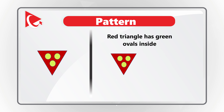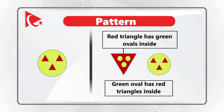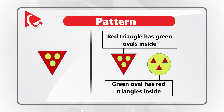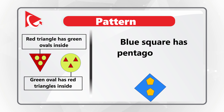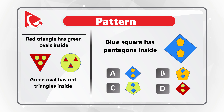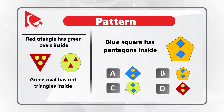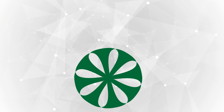If you look closely at the relationship presented, the red triangle has green ovals inside, and it has a relationship to a green oval that has red triangles inside. Knowing this, we need to determine the relationship of the blue square that has pentagons inside. All you need to do is take the pentagon which is inside the square, enlarge it, and put blue squares inside. The correct answer here is choice B.